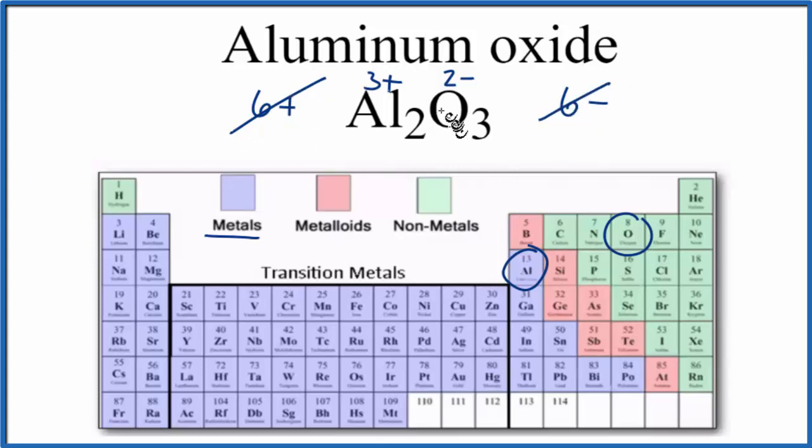We have a net charge of 0. The positive ions, these two aluminum atoms, are attracted to the negative ions, these three oxygen atoms. And because of that, we have ionic bonds. This is an ionic compound.